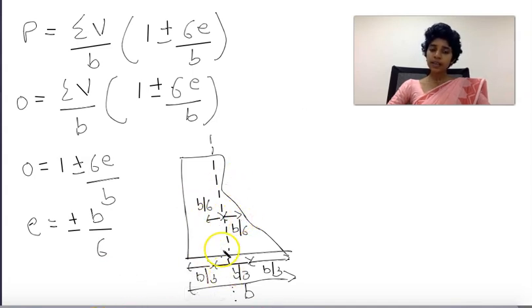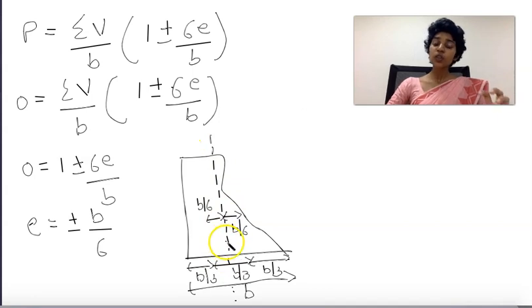When tension equals zero, the eccentricity e should be within the middle third portion. That's why sigma V must act within the middle third.